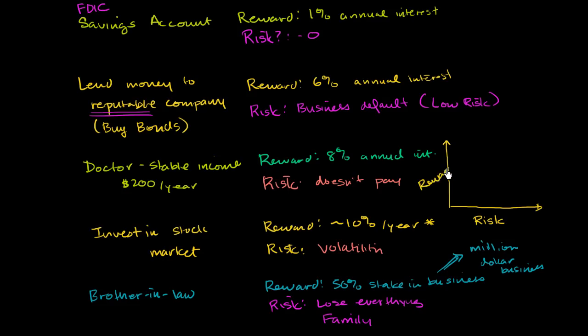So that's risk and reward if you plot it. The savings account, it's zero risk, and your reward is 1%. The lending to a reputable company, it's a little bit higher risk and your reward is 6%. If you lend to the doctor, the risk is a little bit higher than lending to that company or the savings account, and a little bit higher reward, you now have an 8% reward. Investing in the stock market, higher risk but also higher reward, maybe 10% per year. Your brother-in-law, super high risk, probably off the charts, but also super high reward. So maybe it might be like that. But the general idea is the more risk, the more reward.